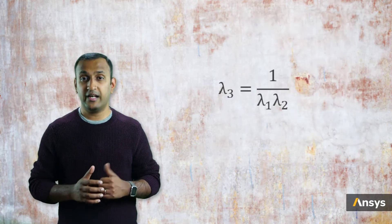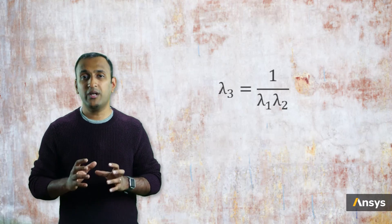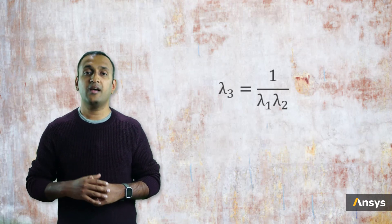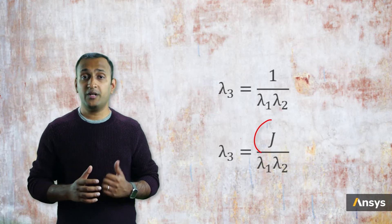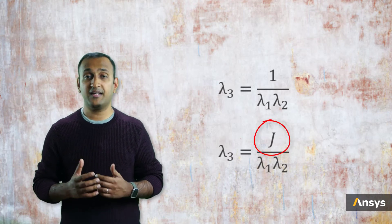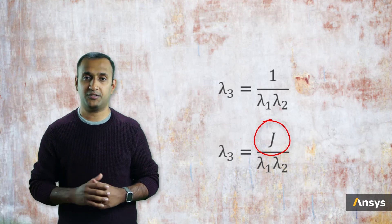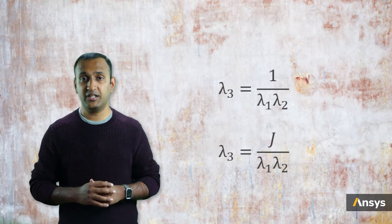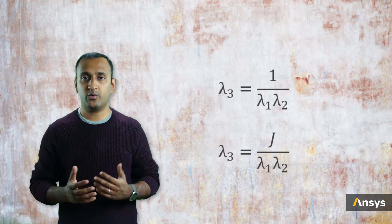Note that this relation holds good only for fully or nearly incompressible materials. In case of compressible materials, the Jacobian is not equal to 1 and in fact is a function of the three principal stretches, so this relation is no longer user-controlled. Also note that the biaxial tension response is a replacement for the uniaxial compression test, but the two responses are not equal.